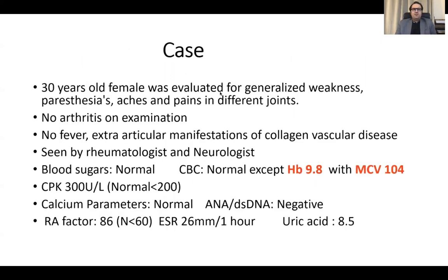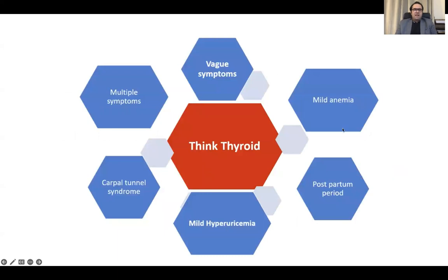Case: A 30-year-old female evaluated for generalized weakness, paresthesias, and aches and pains in different joints. No arthritis on examination, no fever, no extra-articular manifestations of collagen vascular disease seen by rheumatologist and neurologist. Blood sugars were normal. Hemoglobin is 9.8 with MCV of 104. With these body aches, generalized weakness, fatigue, and anemia, we should always think of screening for thyroid and hypothyroidism. Calcium was normal, RA factor slightly above normal at 86, ESR is 26, and mild hyperuricemia. Always think of thyroid when the patient has mild anemia, vague symptoms, multiple symptoms, body aches, weight gain, carpal tunnel syndrome, neuropathies, mild hyperuricemia, or in the postpartum period.